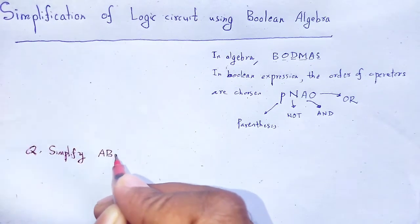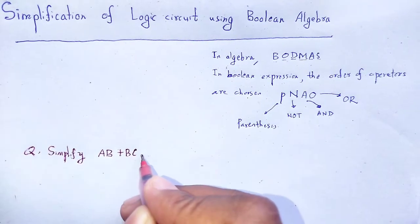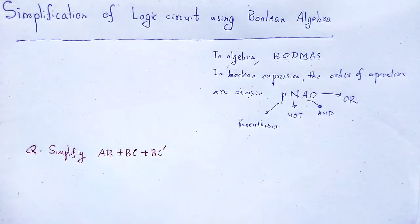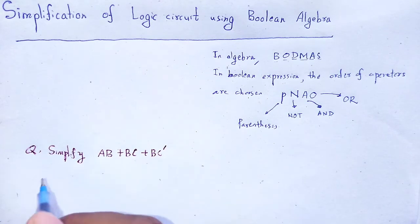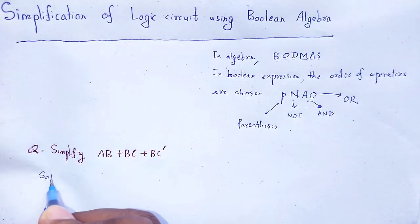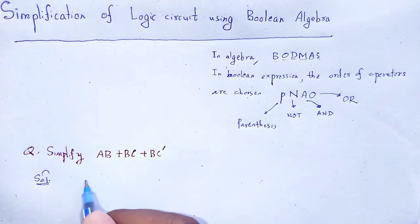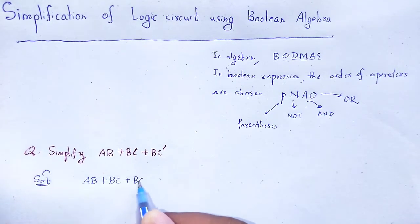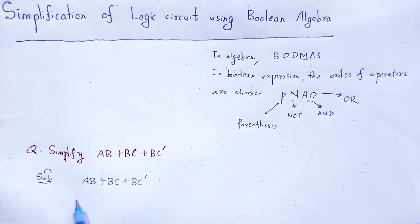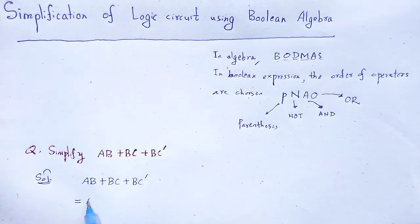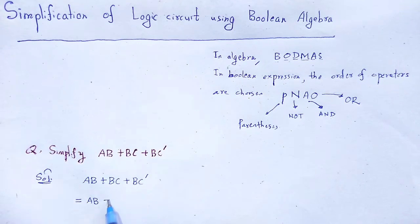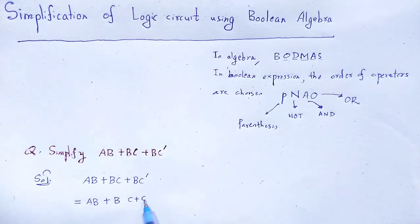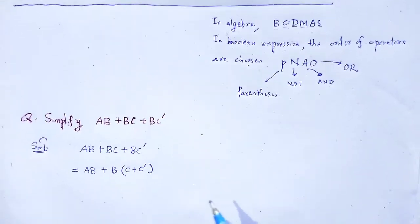Let's solve the problem: AB + BC + BC'. In this expression, looking at the terms BC and BC', we take B as common, giving us AB + B(C + C'). As we know, C + C' equals 1 — when a variable is added with its complement, the result is 1.